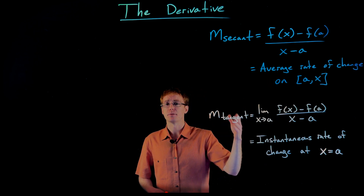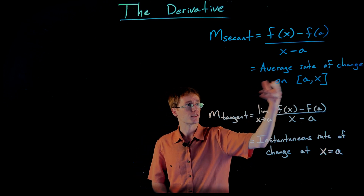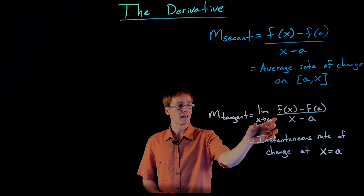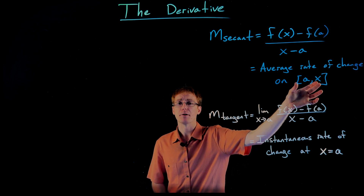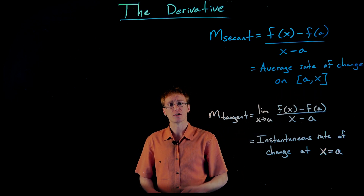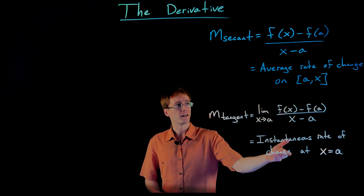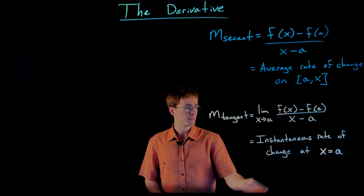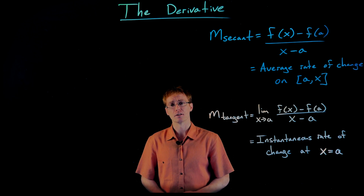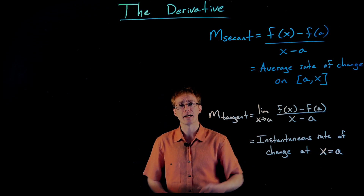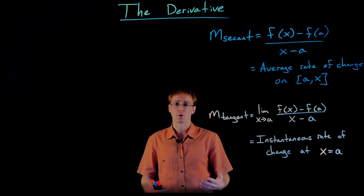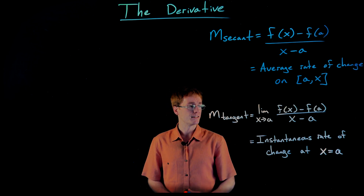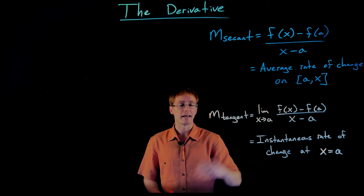When our function f isn't representing position but just some quantity, then the slope of the secant line will represent the average rate of change of that quantity. When we took the limit as x approached a in that example, that caused our time interval to shrink to basically a single point or a single moment in time. Then we are no longer finding the average velocity — it's really the instantaneous velocity of the falling toy helicopter at the time x equals a. If f is just some function representing some quantity, it'll just be the instantaneous rate of change of that quantity at x equals a.